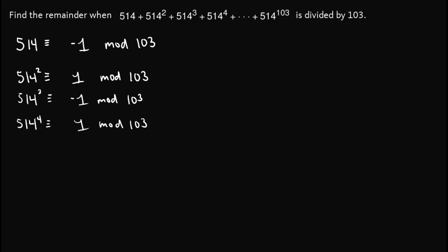So what can we observe here? Well, if the exponent of 514 is odd — say 1 or 3 — then the remainder is negative 1. In this sense we know it is 102, but we treat it as negative 1. Now, if the exponent of 514 is even — in this case 2 or 4 — then the remainder is 1.